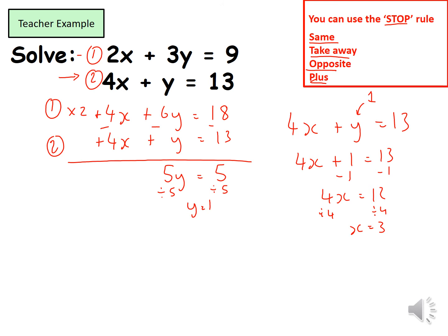To double-check, I substitute both values back into equation one. Equation one is 2x plus 3y equals 9. With x equals 3 and y equals 1: 2 times 3 is 6, plus 3 times 1 is 3. Does 6 plus 3 equal 9? Yes it does — therefore our values are correct. Please copy this example out before you move on to the next one.